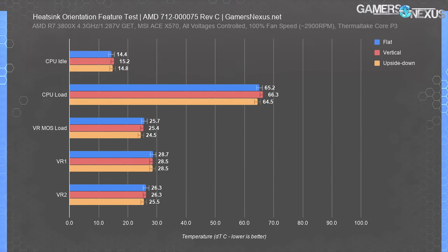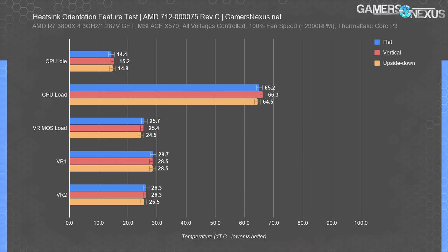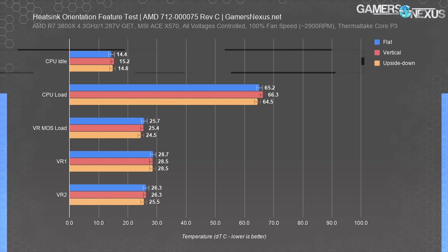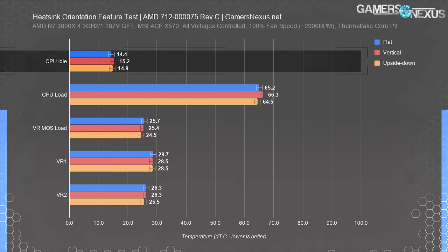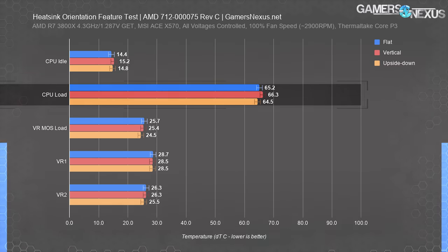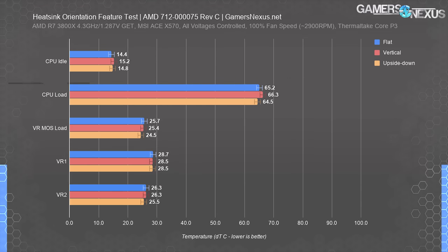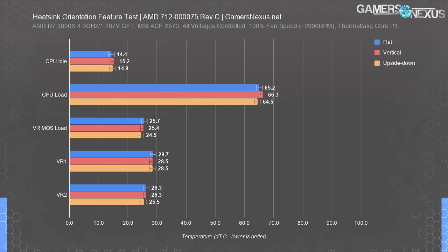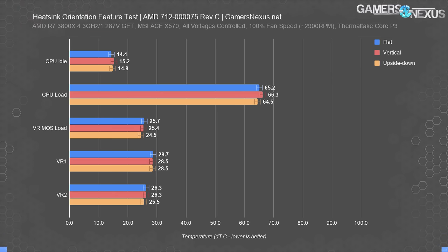Even though the heat pipes were flush against the IHS and the cooler is significantly weaker than the D15, we found no discernible difference in CPU temperatures throughout the three tests. This is why capillary action is good for heat pipes — it works well in all orientations, at least for this application. Idle temperatures were within error at 14.4 to 15.2 degrees Celsius over ambient, a range of 0.8 degrees. Load tests had us at 65.2, 66.3, and 64.5 degrees Celsius over ambient — a maximum range of 1.8 degrees Celsius, still within error.